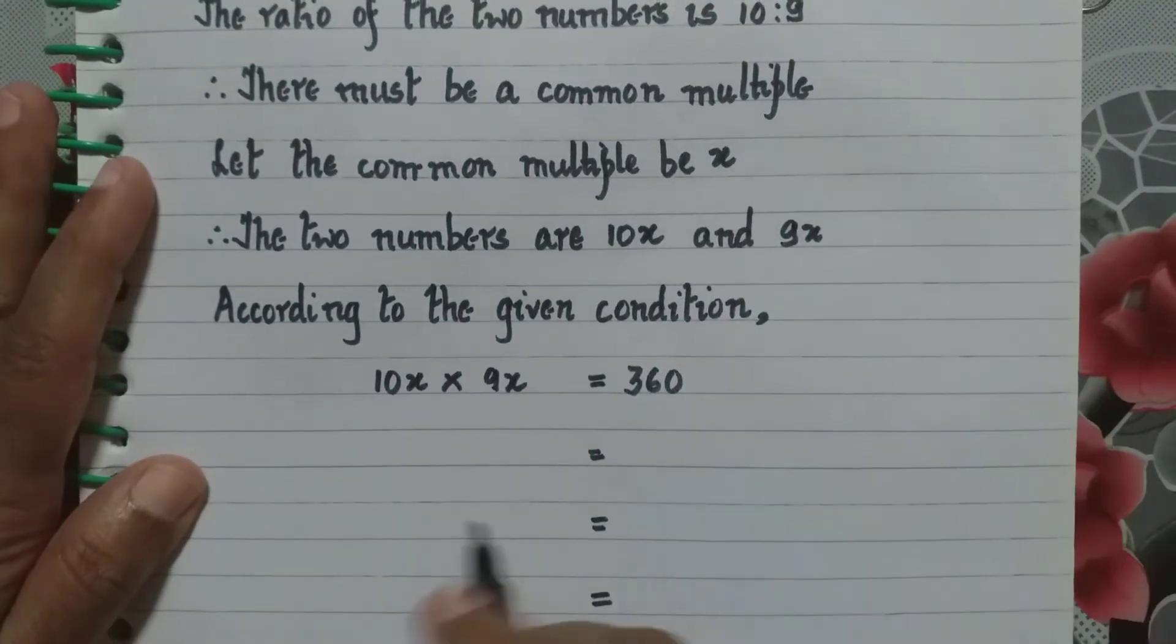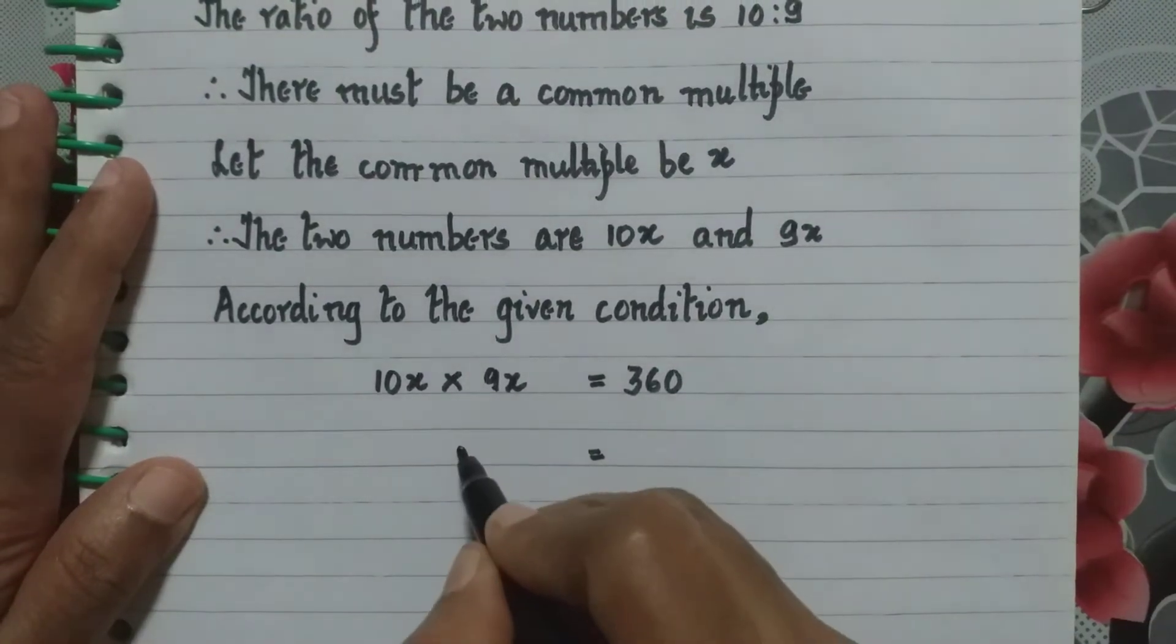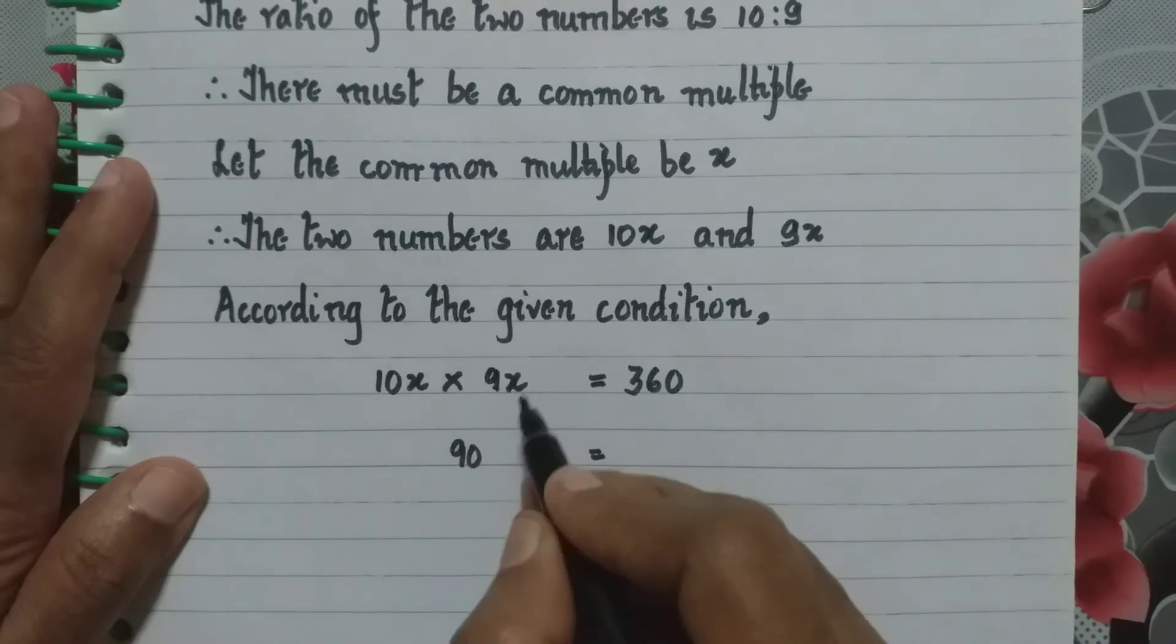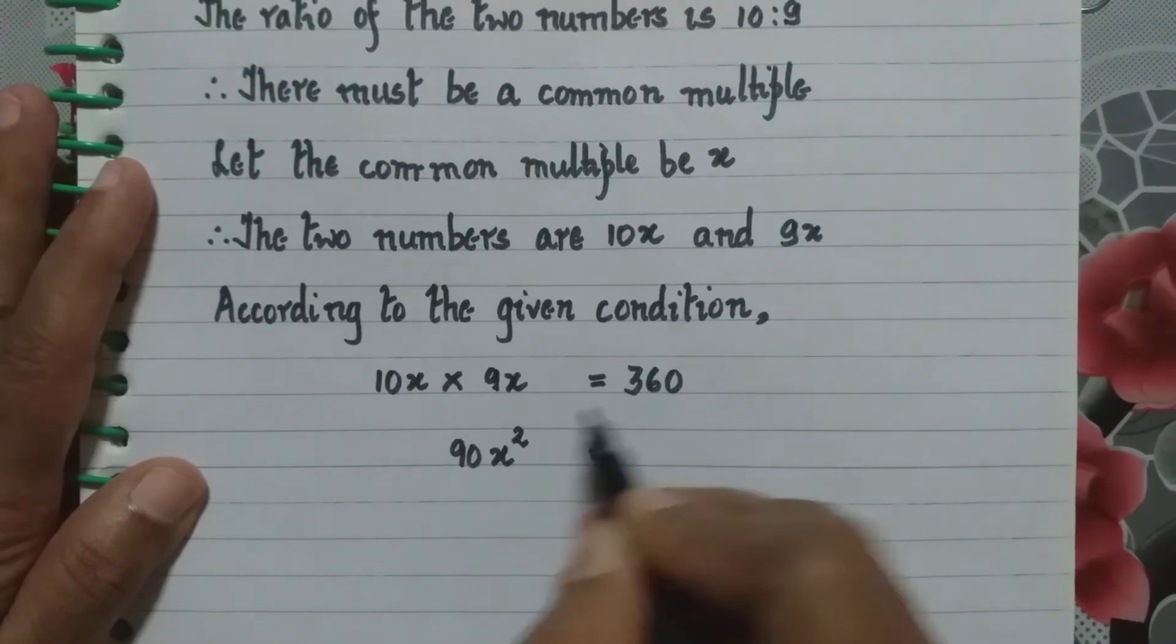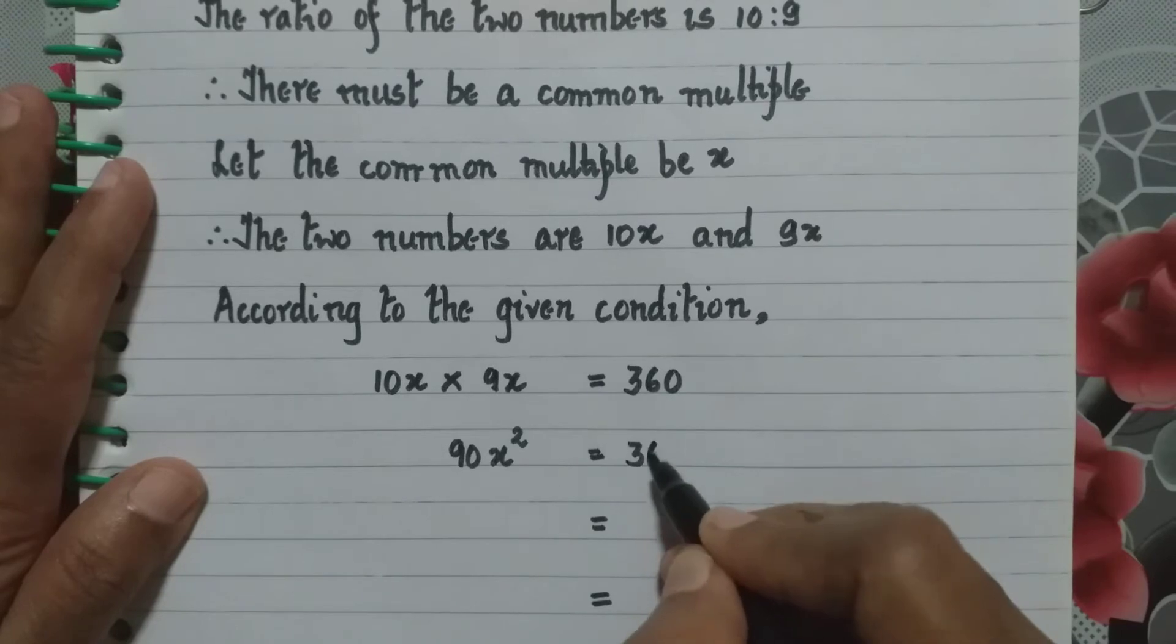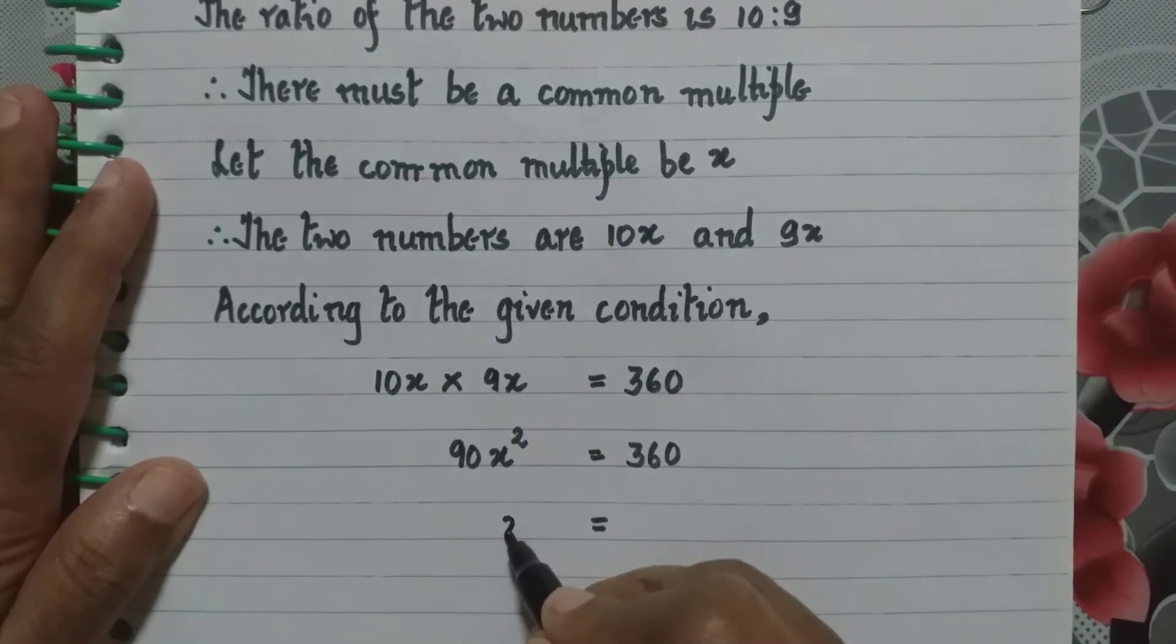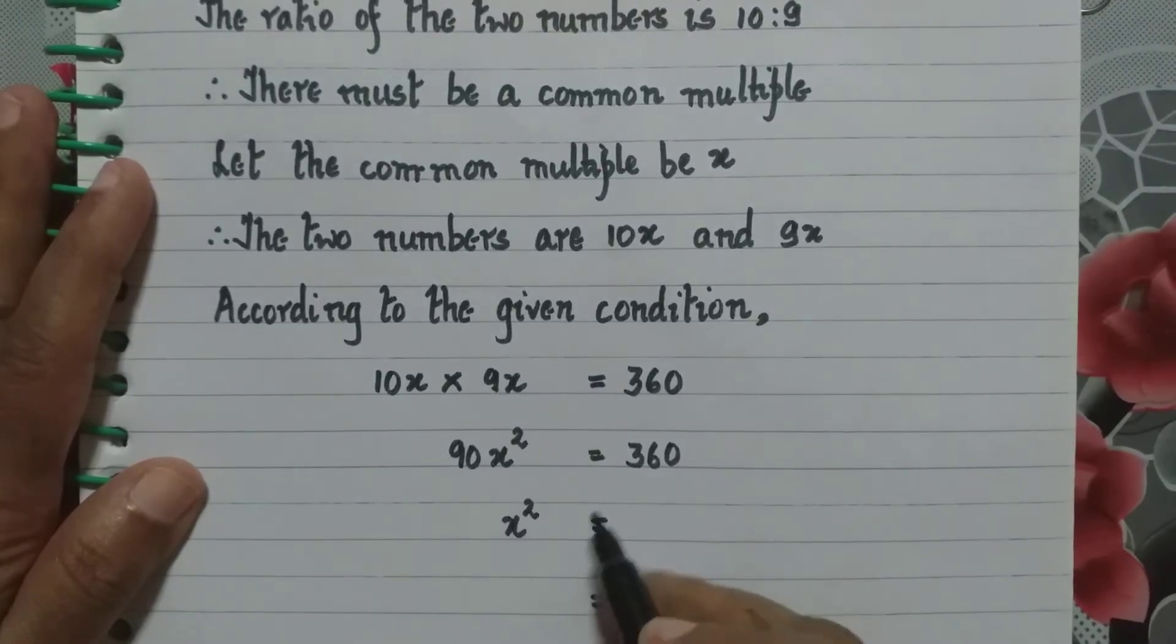Now we multiply: 10 into 9 is 90, x into x is x square, and then we get here 360.